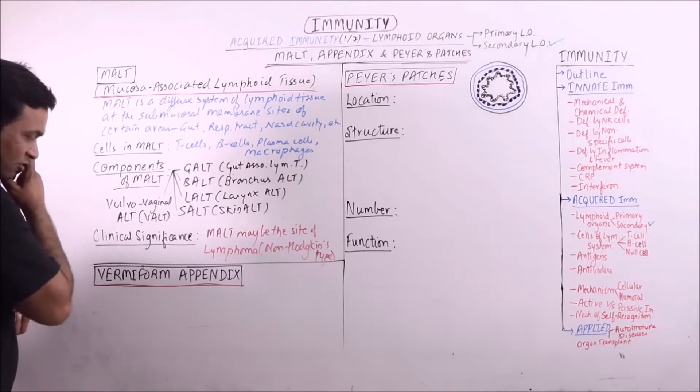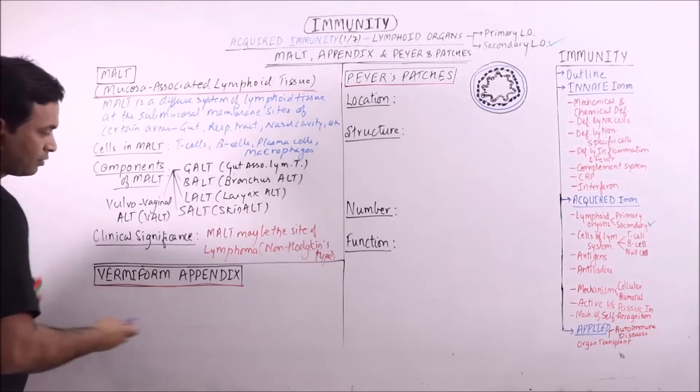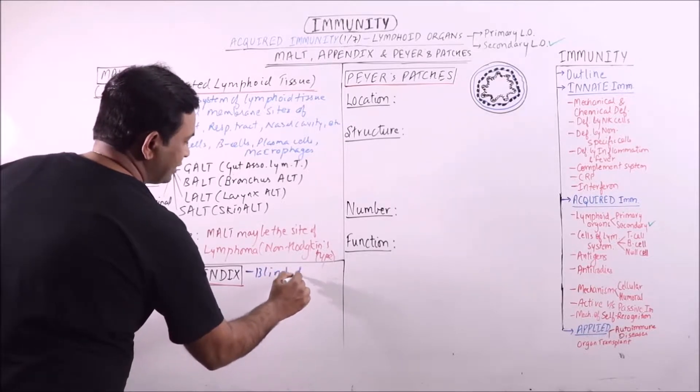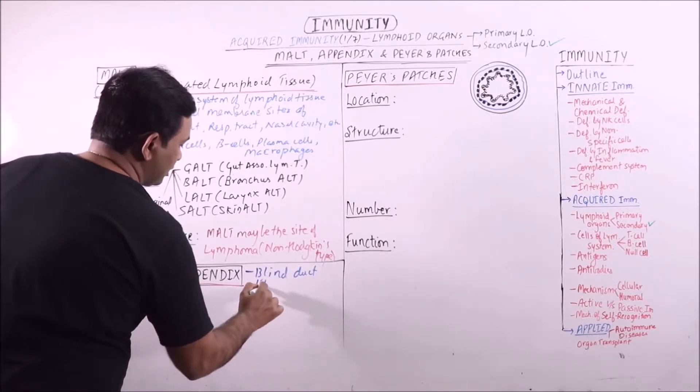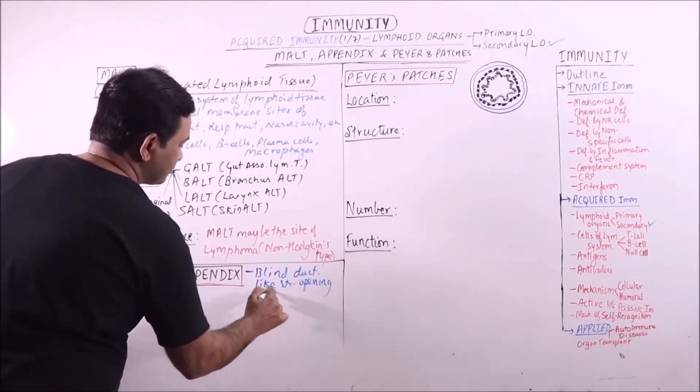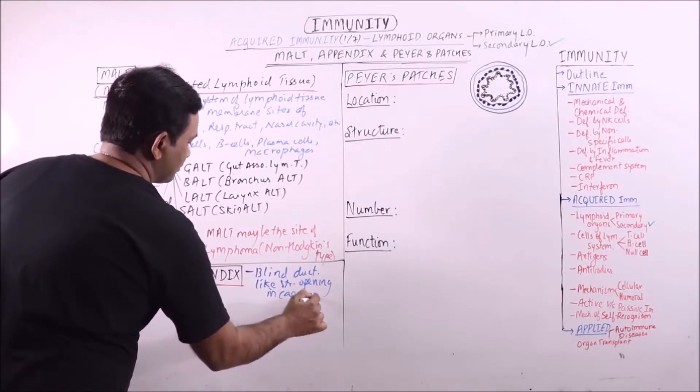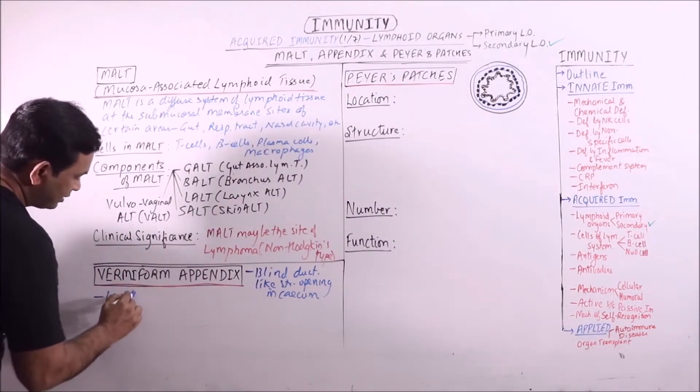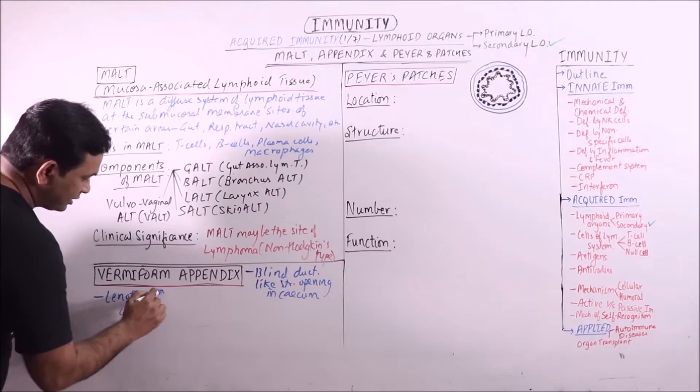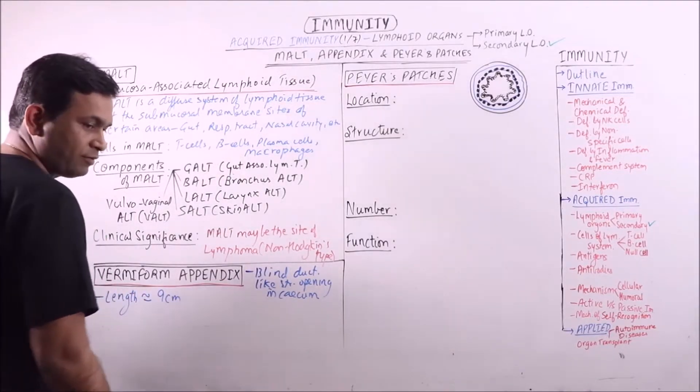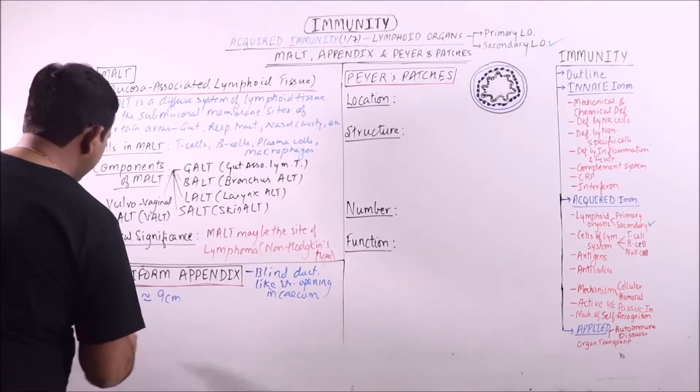Now the vermiform appendix. Vermiform appendix is a blind duct-like structure opening in cecum. The average length is 9 cm, but it may vary. It may even extend up to 20 cm.